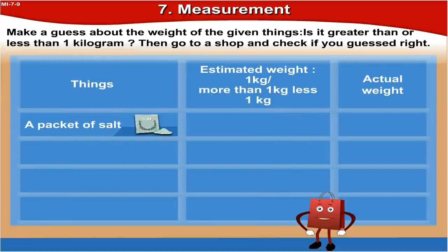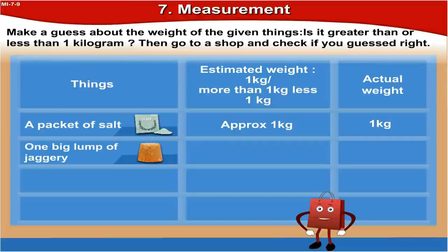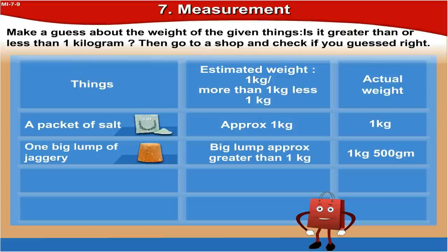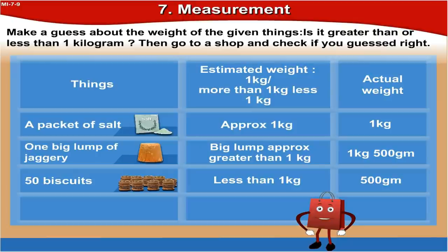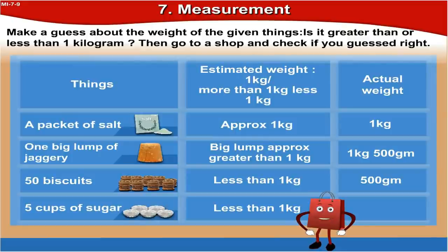A packet of salt — the estimated weight is approximately 1 kg, and the actual weight is 1 kg. 500 grams — 50 biscuits — the estimated weight is less than 1 kg, and the actual weight is 500 grams. 5 cups of sugar — the estimated weight is less than 1 kg, and the actual weight is 750 grams.